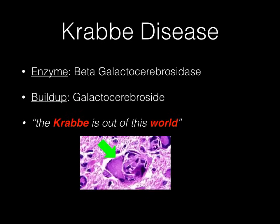Next is Krabbe's disease. The enzyme deficiency is beta-galactocerebrosidase, and the buildup is galactocerebroside. The mnemonic is: 'The crab is out of this world' — crab for Krabbe's disease, and world for galactocerebroside, since galacto is like galaxy or globe. The classic histology associated with Krabbe's disease is globoid cells. If you like crabs, you're always trying to get a big glob of crab meat — so crab, glob of crab meat, globoid cell.